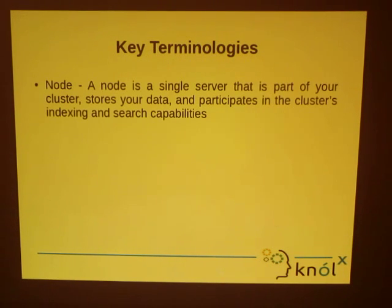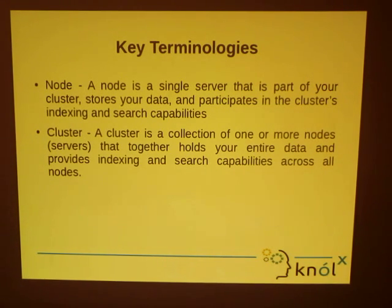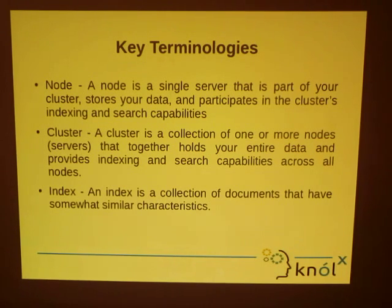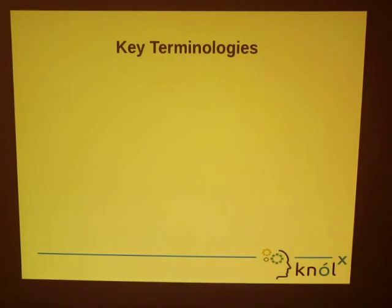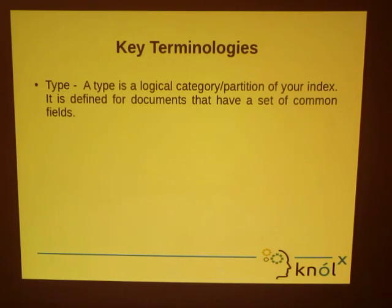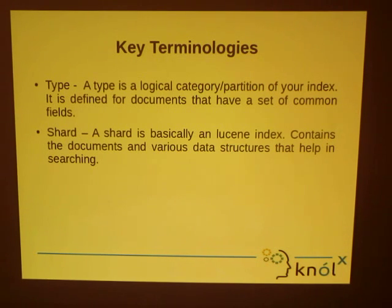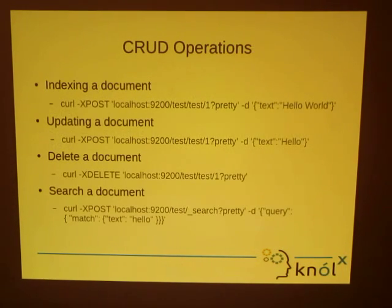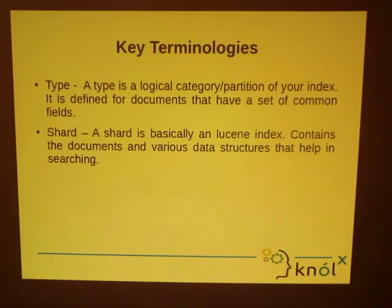The key terminologies: A node is a single server or an instance of Elasticsearch that stores your data and participates in index and search capabilities. A cluster is a collection of one or more nodes that together hold your data and provides search capabilities across all nodes. An index is a collection of documents that have somewhat similar characteristics — it is like a database in MySQL. A type is a logical category or partition of your index, defined for documents having similar fields — it is like a table in MySQL. A shard is basically a Lucene index; it contains the documents and the various data structures that help in searching. Data replication happens across nodes.